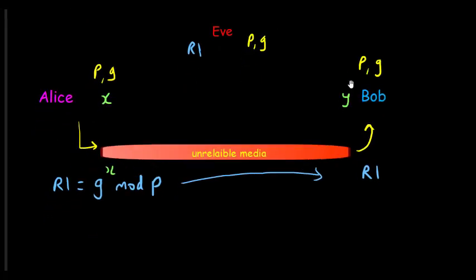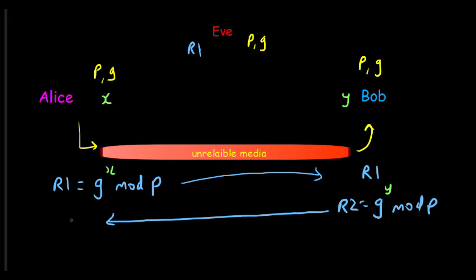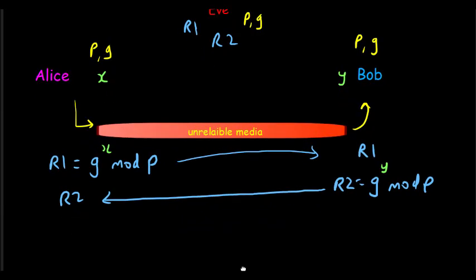Bob performs a similar calculation using the three values P, G, and his private number Y. Bob calculates R2 = G raised to Y, mod P — where Y is Bob's private number known only to him. This R2 is then shared by Bob with Alice through the unreliable media, so Alice receives R2 and Eve also gets access to R2.